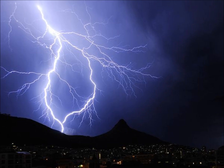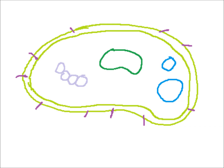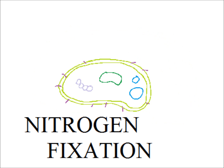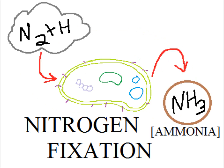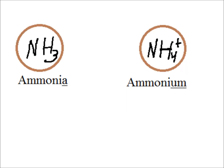Lightning does some of the work, but most is done by bacteria. In nitrogen fixation, bacteria absorb nitrogen gas and combine it with hydrogen to make ammonia. Think of bacteria fixing the nitrogen to the ground. Some of the ammonia is converted into ammonium. Ammonium has more letters and more hydrogen atoms than ammonia.